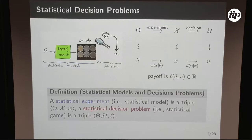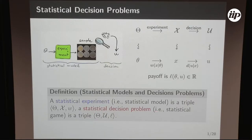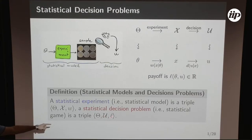A statistical experiment — or sometimes called statistical model — is a triple given by the parameter space, the sample space, and the conditional probability distribution. A statistical decision problem, sometimes called a statistical game, is also a triple: the parameter space, the action space U, and the payoff function L, which is a real vector. There is going to be some sort of duality between models and games — you will use games as a kind of linear functional on experiments.